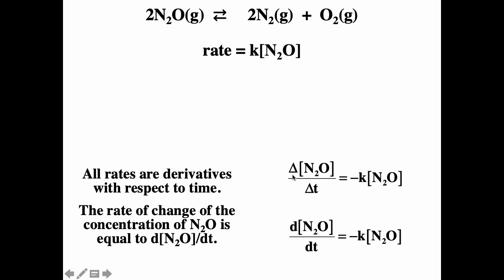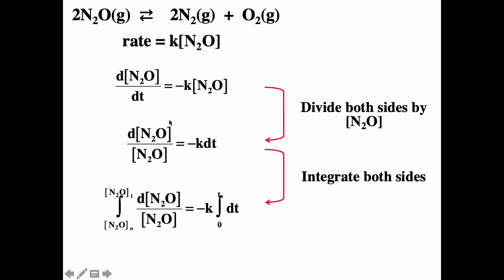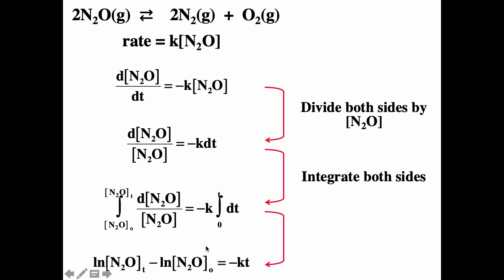The triangles or deltas represent change. If you imagine a very, very small change, you can change the delta into a d — this is referred to as a derivative: the change in concentration of N₂O as a function of time. If we divide both sides by the concentration of N₂O, we get that expression, and then if we integrate both sides, we get the integrated rate equation.